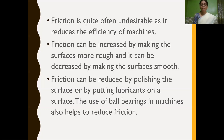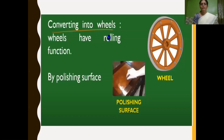For example, in skating shoes, the wheels have ball bearings, because it reduces friction so that you can skate easily. Also, most suitcases we use to carry have wheels. We prefer suitcases with wheels because, when we pull them, rolling friction — which as we have learned has very less friction — allows us to move the suitcases easily. So, converting to wheels is also one method to reduce friction.